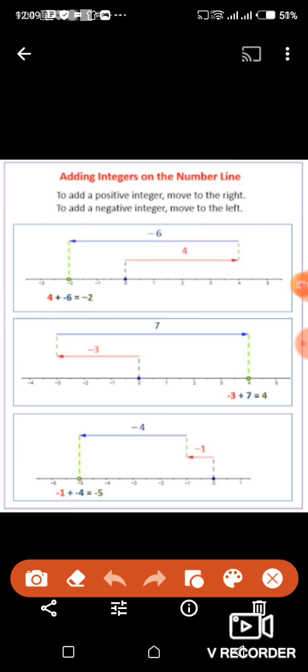In first one, 4 plus minus 6 is equal to minus 2. The first number is 4. We start at 0 and we proceed 4 units to the right to reach at 4. And then plus minus 6. Minus 6 is a negative number. So, now from 4, we proceed 6 units to the left. So, we reach at minus 2. And minus 2 is the answer.